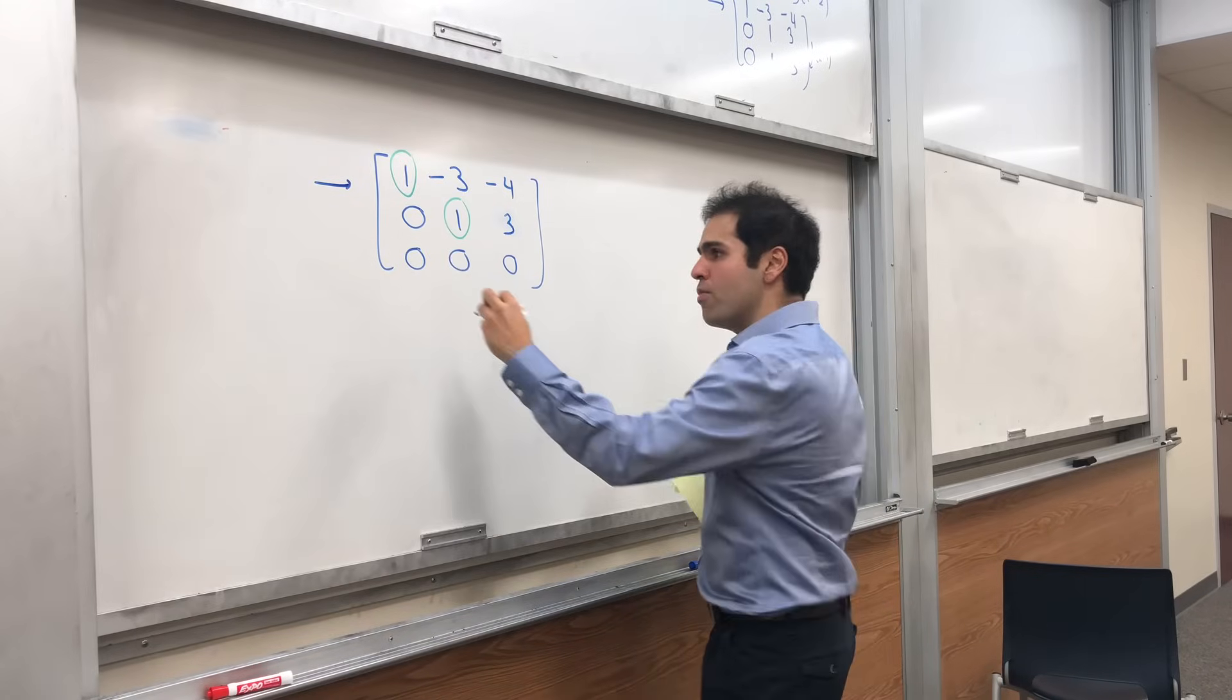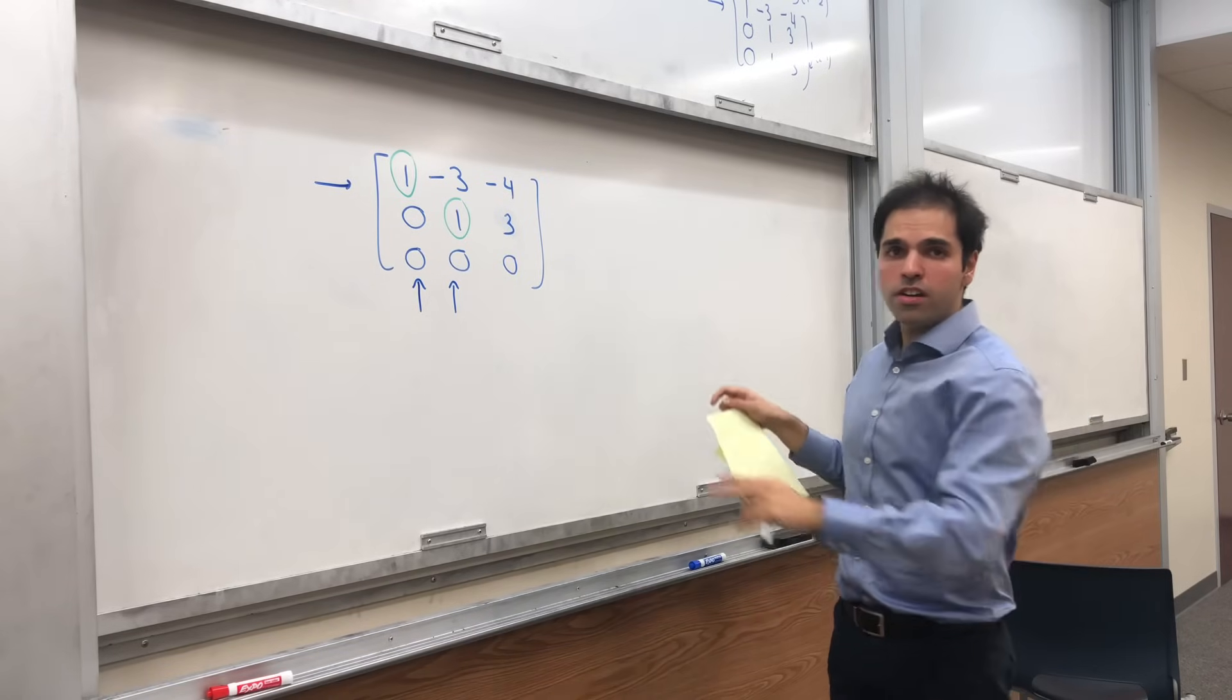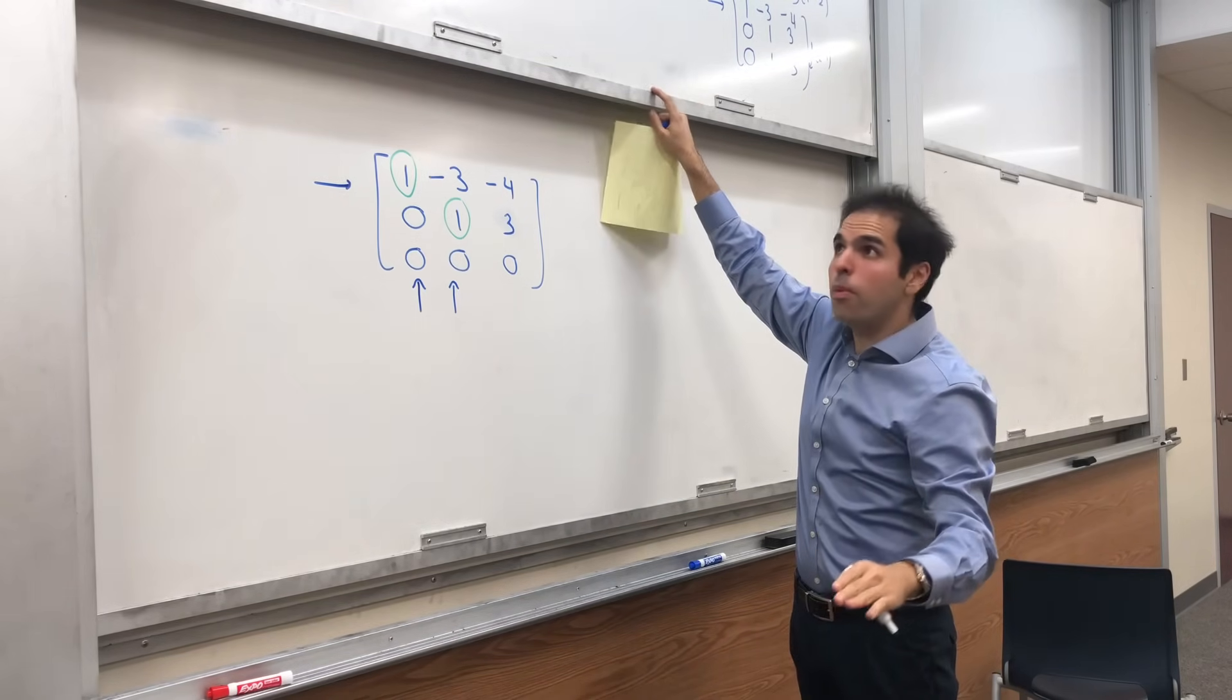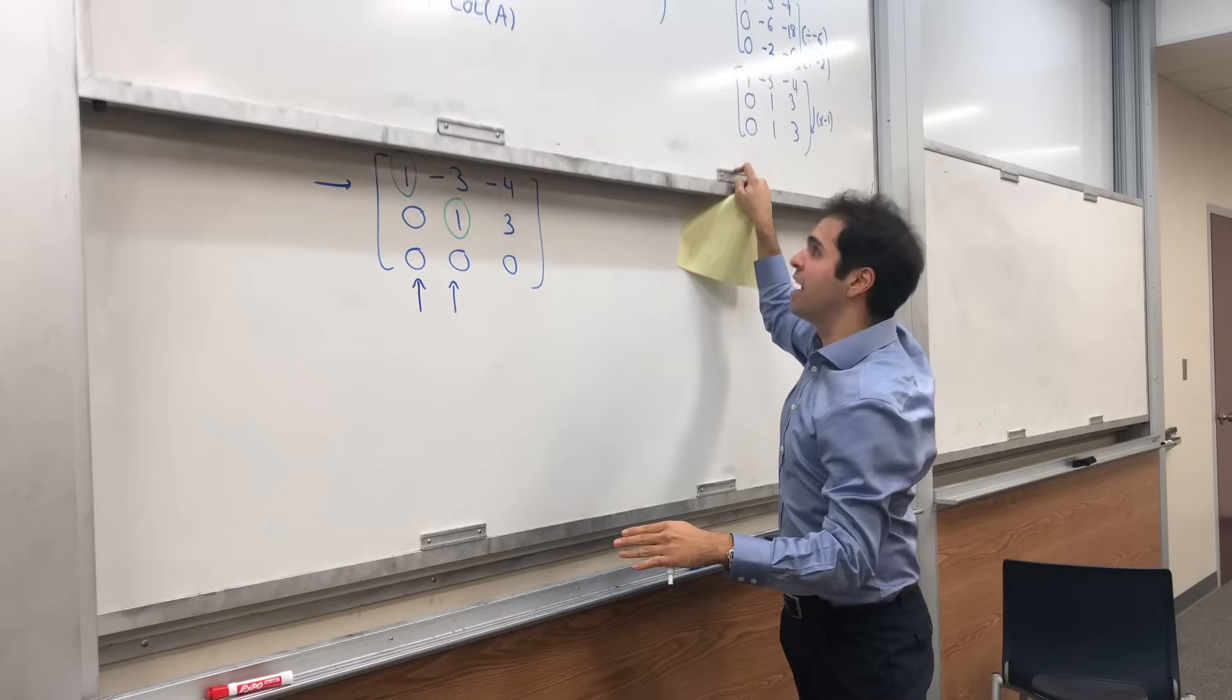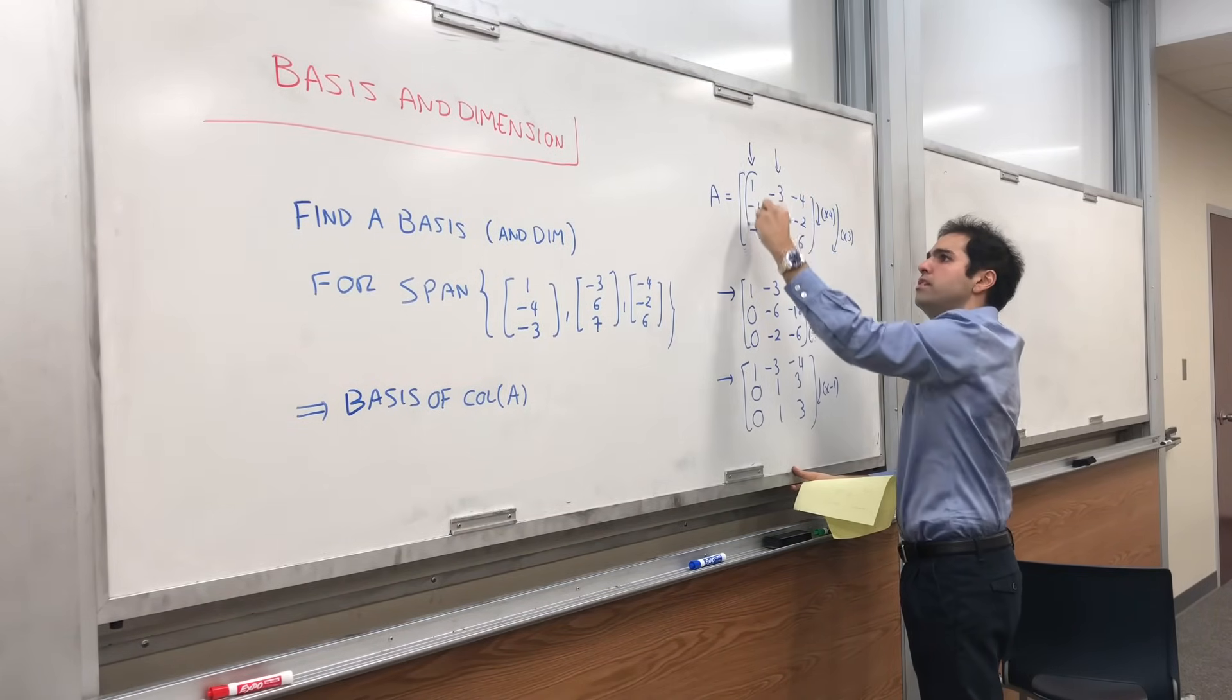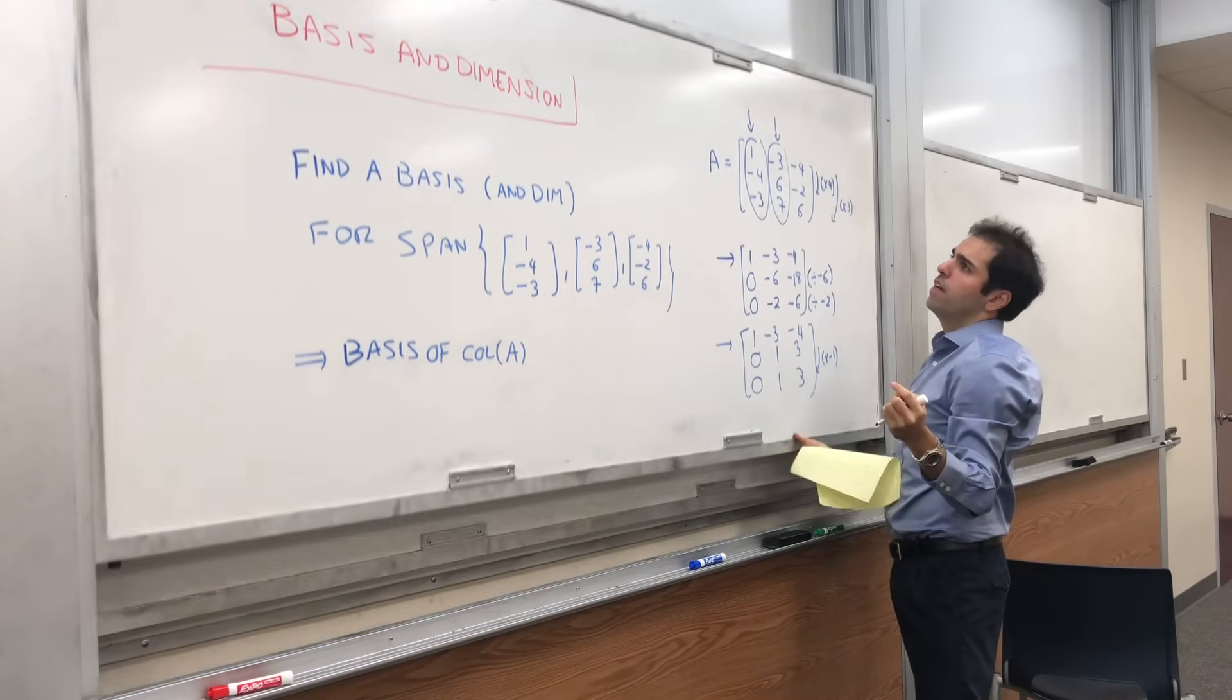And remember what you do. You figure out the columns where the pivots are, which are the first and the second column. And very important, you have to go back to the first and second columns of A. So really, a basis for your column space are those two vectors.